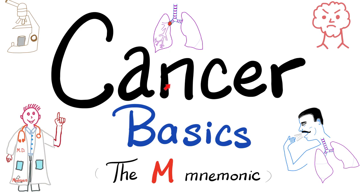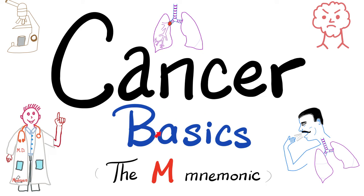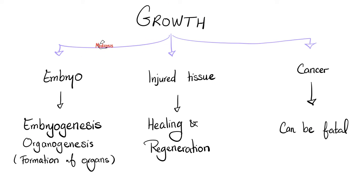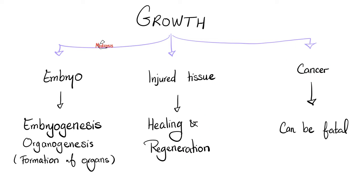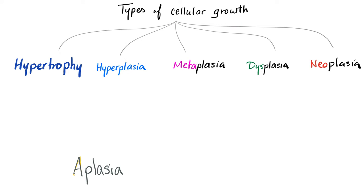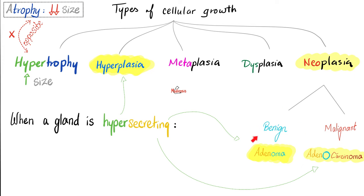And 'oma' means mass. Let's review from the Cancer Basics video. Remember that growth includes normal growth during embryology, healing and regeneration after injury, as well as neoplasias. Cancer is the malignant neoplasia. Choristoma is not a neoplasia. Cellular growth could be hypertrophy, hyperplasia, metaplasia, dysplasia, or neoplasia. Neoplasia includes benign tumors and malignant tumors — i.e., cancers. But hematomas and choristomas are not neoplasias.